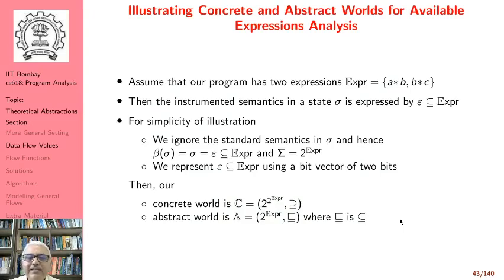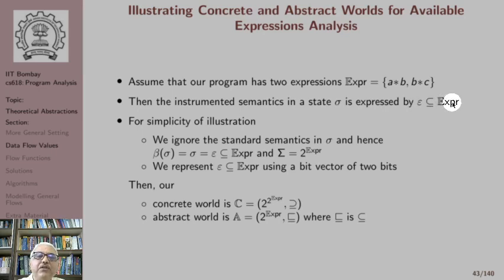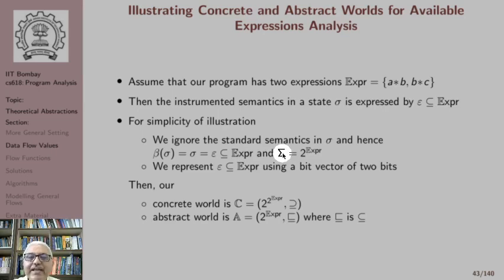We illustrate the concrete and abstract worlds for available expressions analysis. Assume our program has two expressions a*b and b*c, so the universal set of expressions is {a*b, b*c}. The instrumented semantics in a state sigma is represented by some set epsilon which is a subset of expr. The universal set of states is the power set of expressions.